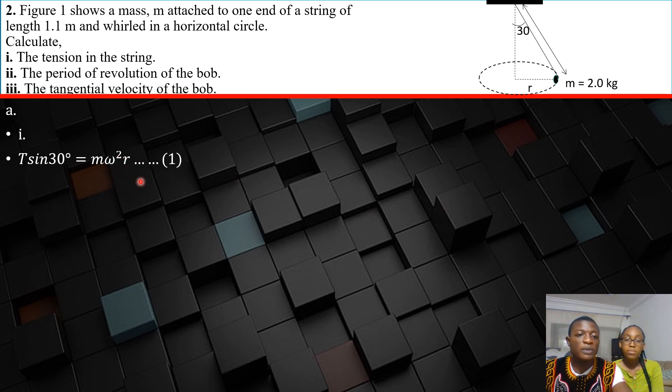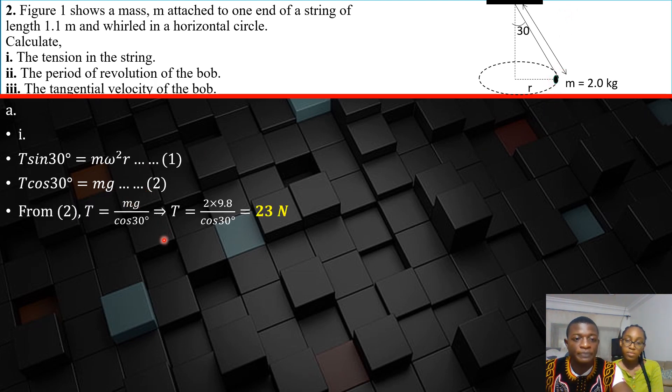And then T cos theta, which is the vertical component of the tension, will balance out the weight. That's why we equate that to mg. From equation 2, we can make T the subject which is tension in the string.